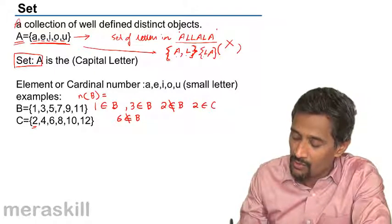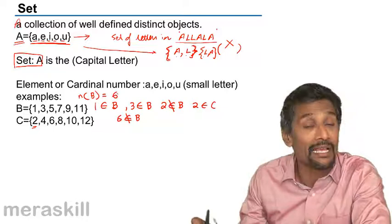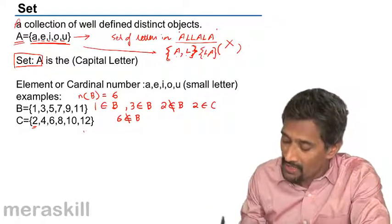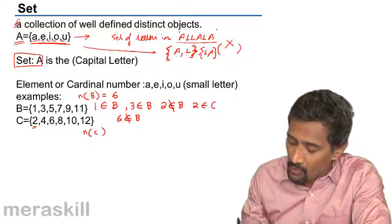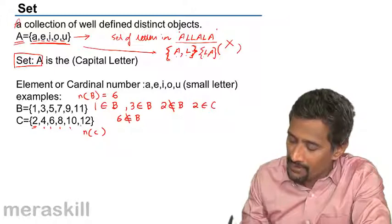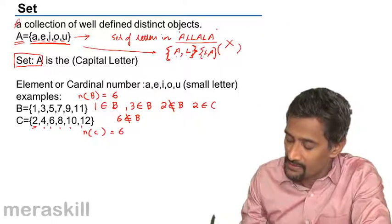Cardinal number means how many elements we have. For example, n(B) - the cardinal number of B in this case - is 1, 2, 3, 4, 5, 6, so it is 6. There are six elements in B. Similarly, cardinal number of C: 1, 2, 3, 4, 5, 6. n(C) is 6.